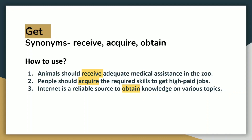The next word is GET — a very simple word. I want you to write receive, acquire and obtain in place of get. Animals should receive adequate medical assistance in the zoo. People should acquire the required skills to get high-paid jobs. The internet is a reliable source to obtain knowledge on various topics.